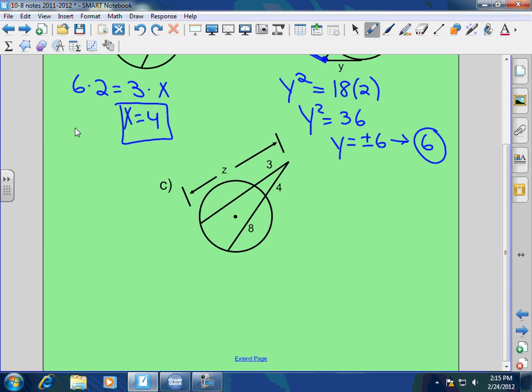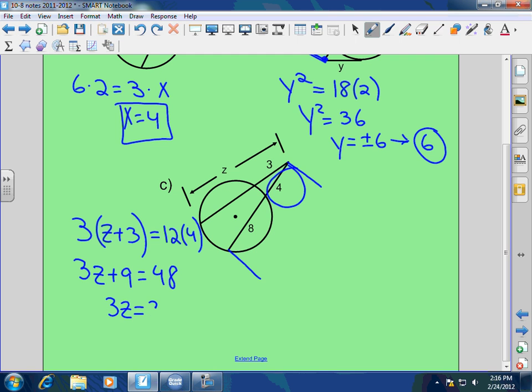Now I want to find the entire length of the secant segment with the external part of 3. I want to find Z. So this is secant-secant. So be careful with this one. A lot of people always mess up. It's 3 times Z plus 3, the whole times the external part, equals 12 times 4. It's the whole secant times the external part. So this is 3Z plus 9 equals 48. So 3Z equals 39, so Z equals 13. The whole kit and caboodle is 13. What would the inside part be? 10. Exactly. Does that make sense?